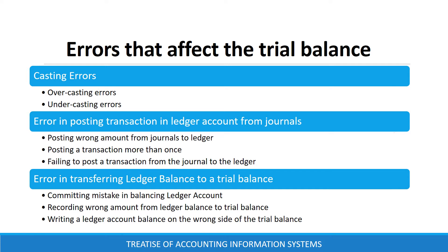Errors in posting transactions from journals to the ledger may include posting wrong amounts from journals to the ledger, posting a transaction more than once, and failing to post a transaction from the journals to the ledger. Errors that may arise while transferring ledger account balances to the trial balance may include committing a mistake in balancing ledger accounts, recording wrong amounts of the ledger account balance to the trial balance, and writing a ledger account balance on the wrong side of the trial balance.